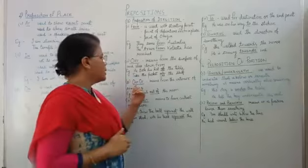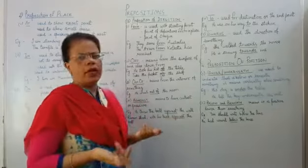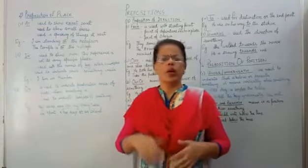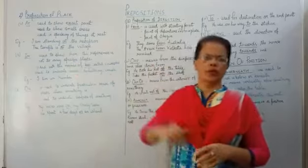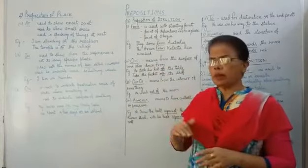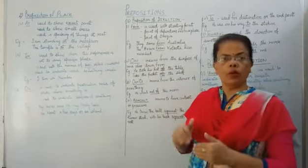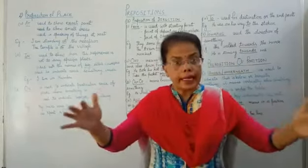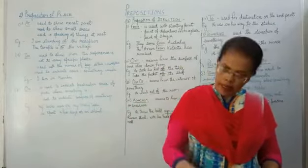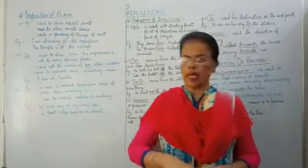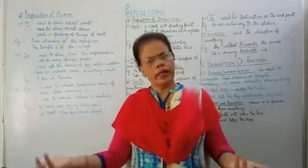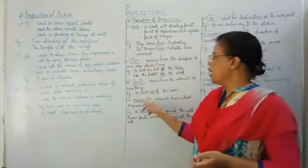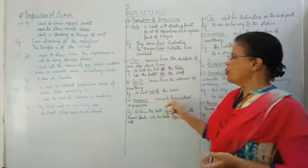Next is 'out of'. Most of the time teachers tell students — go out of the classroom. So it means something going out from the interior of something — from inside to outside. That is 'out of'. It is very easy. Example: He went out of the room.